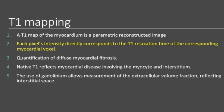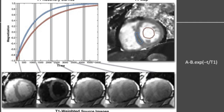What is a T1 map? It is a parametric reconstructed image where each pixel's intensity directly corresponds to the T1 relaxation time of the myocardial voxel. This enables quantification of diffuse myocardial fibrosis in cases where LGE does not give an answer.